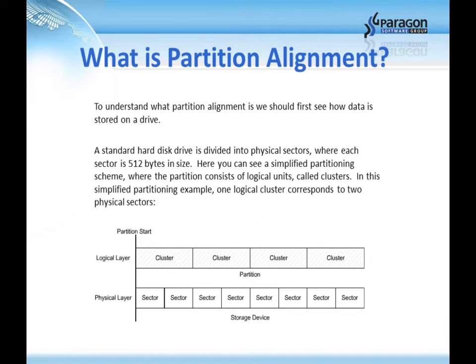The first question that comes to most people's mind is: what is partition alignment? To understand what partition alignment is, we will first need to understand how data is stored on a drive. A standard hard drive is divided into physical sectors. Each sector is 512 bytes in size. Here we see a simplified partitioning scheme where the partition consists of logical units called clusters. In this example, one logical cluster corresponds to two physical sectors.